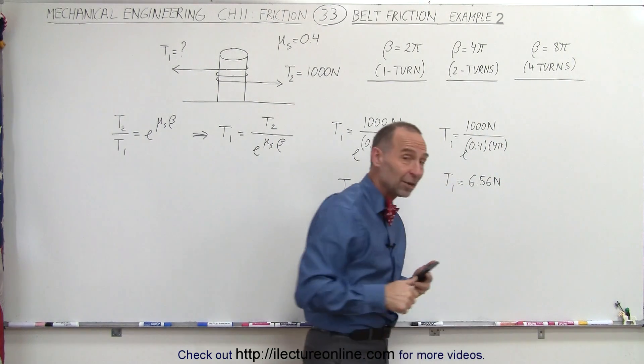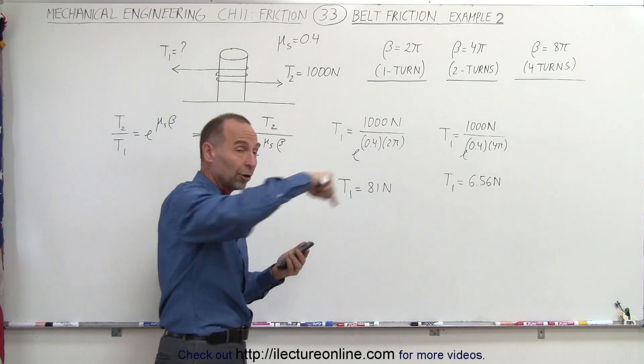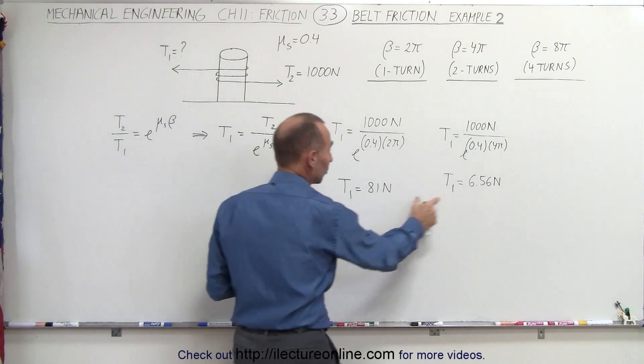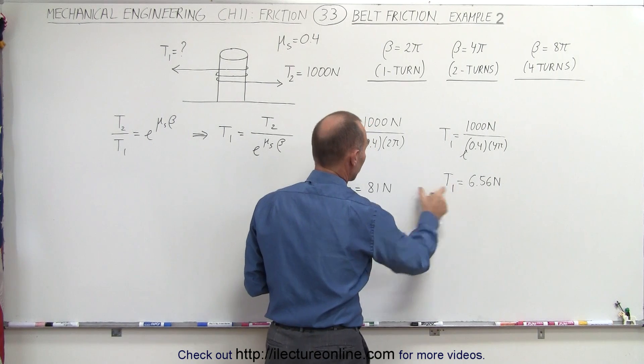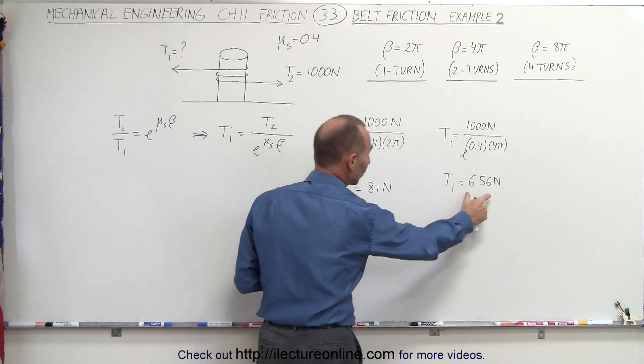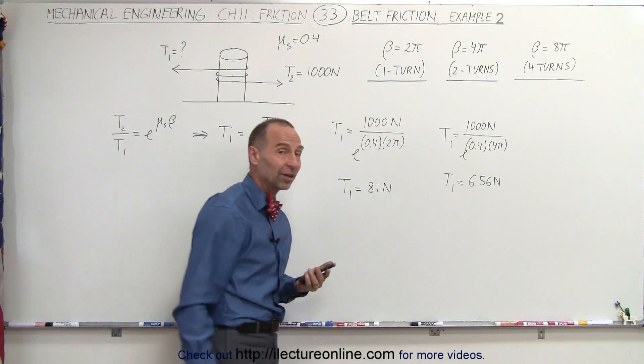What's interesting here is even though we simply doubled the number of turns from one to two, the amount of tension required to keep the rope from slipping dropped dramatically from 81 newtons down to less than 10% of the original amount.